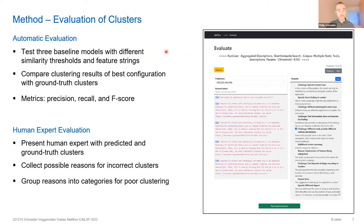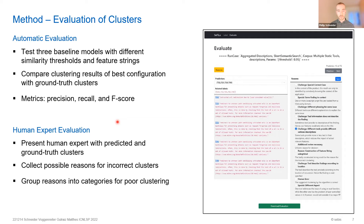For the evaluation, once we had our ground truth dataset, we tested the three semantic similarity methods for different similarity thresholds. We also experimented with different feature strings — how we constructed the corpus of our security findings — and measured performance using precision, recall, and F-scores. After the automatic evaluation, we also had a human expert evaluation where one security professional reviewed the incorrectly classified security findings and tried to come up with potential reasons why there could be difficulties assigning them to the correct cluster.